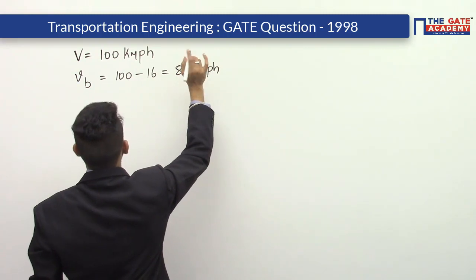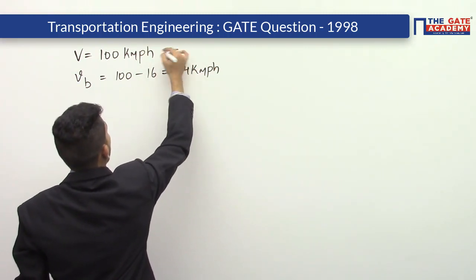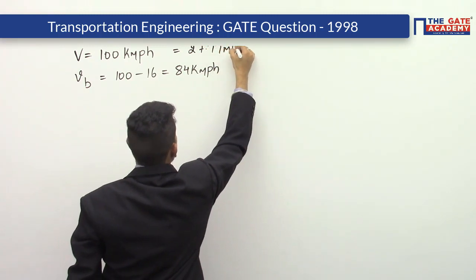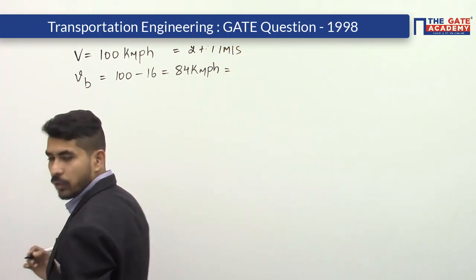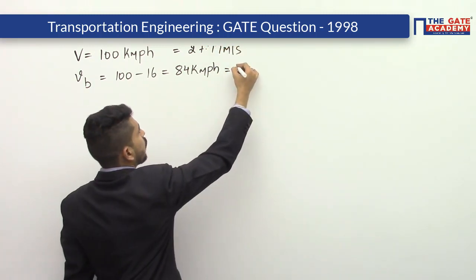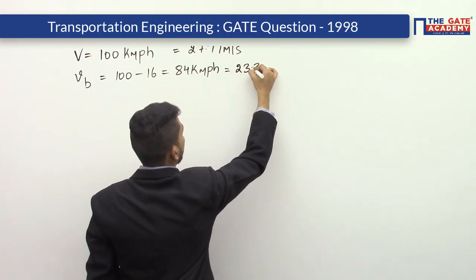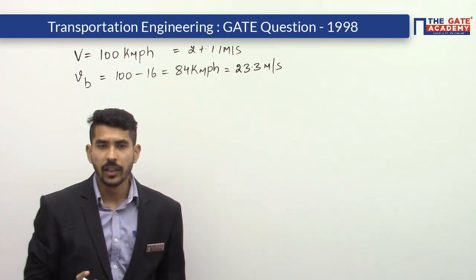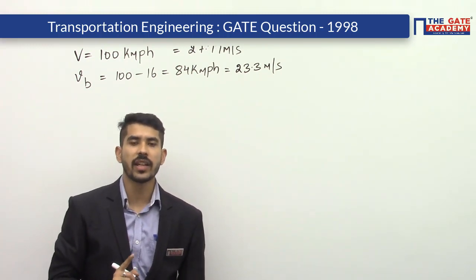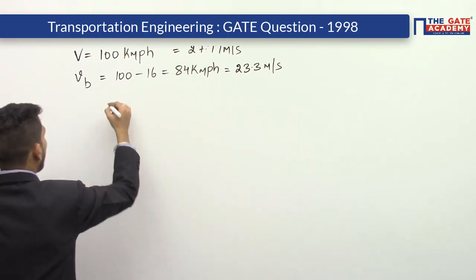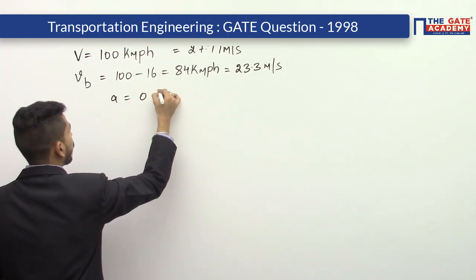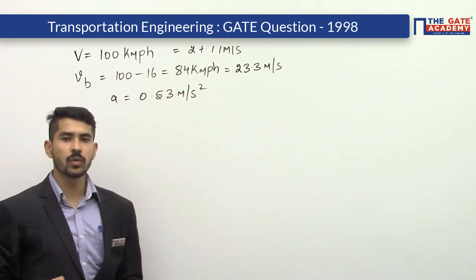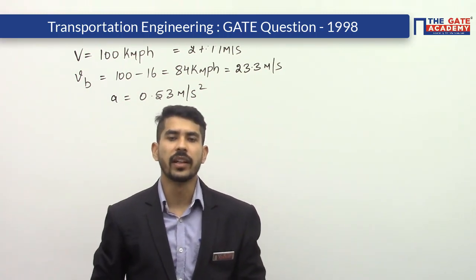Converting these two values into meters per second: 100 km/h becomes 27.77 meters per second and 84 km/h becomes 23.3 meters per second. The acceleration value given is a equal to 0.53 meter per second square, and we need to calculate the overtaking sight distance.